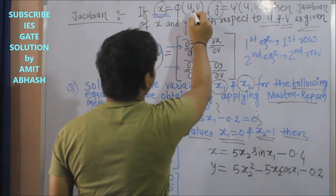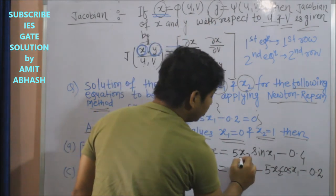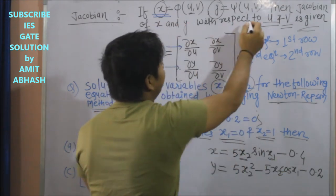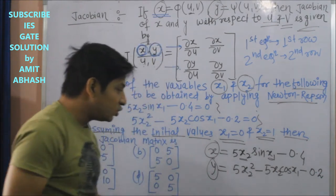Now we have in place of u and v - u and v ka function - so here x2 and x1 ka function. Left side me x and y, this is our functions. So now we can write this Jacobian.